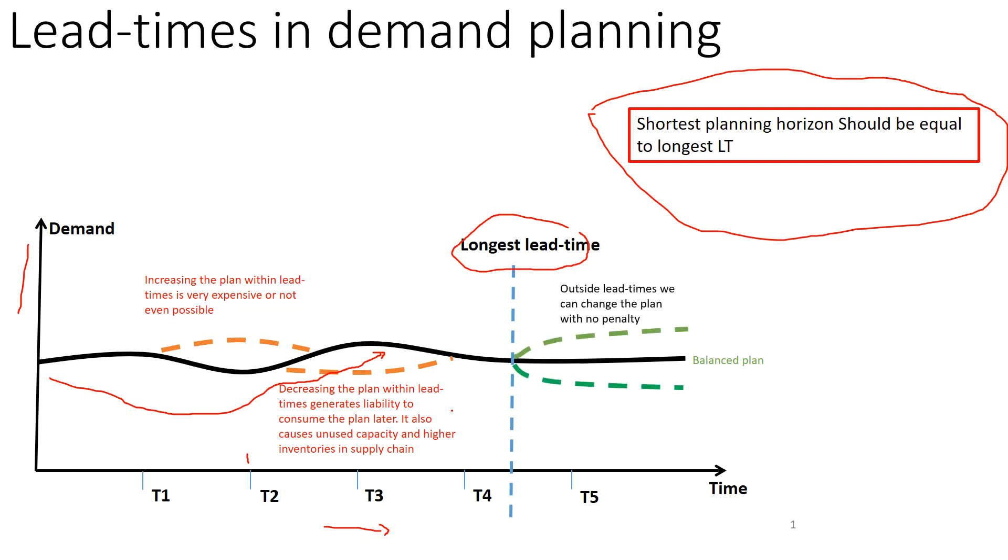Now let's say the ideal scenario. The demand increase happens outside the lead time. So of course this is very easy to accommodate. You can meet this demand increase because you have enough time to order the components. It is beyond the lead time of the component. Similarly, if there is a demand drop, you can easily accommodate the demand drop because it is beyond the longest lead time.